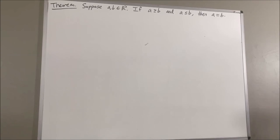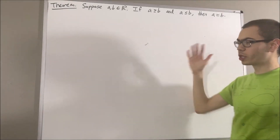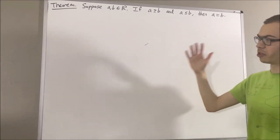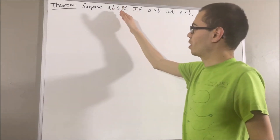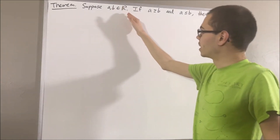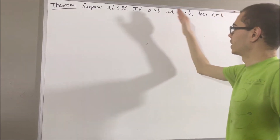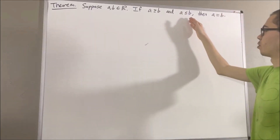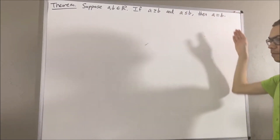Hello! In this video, we are going to prove the following theorem. Suppose a and b are real numbers. If a is greater than or equal to b, and a is less than or equal to b, then a is equal to b.